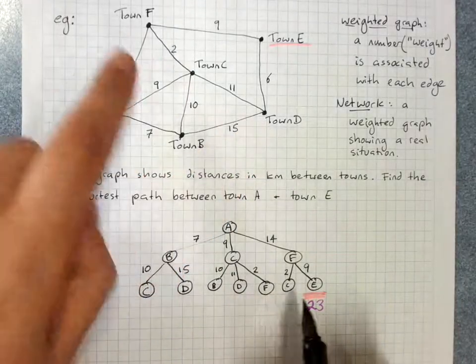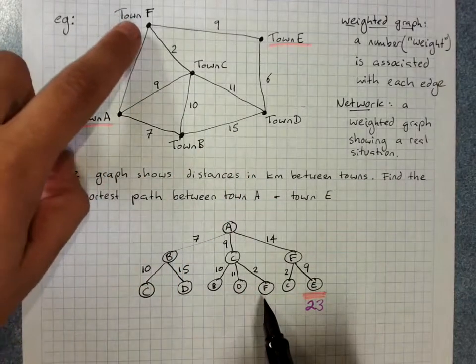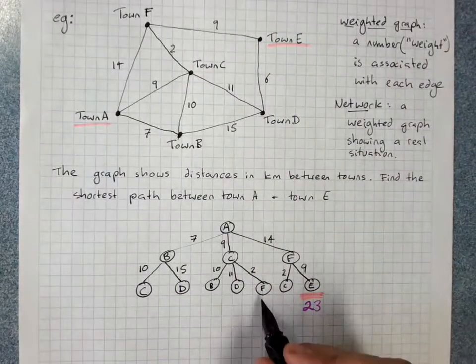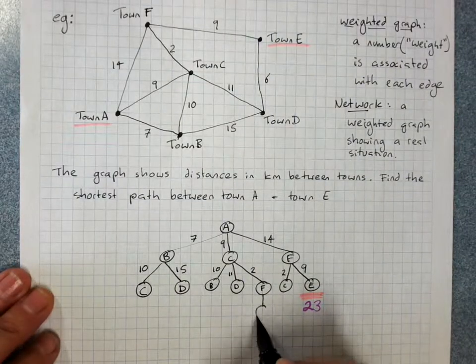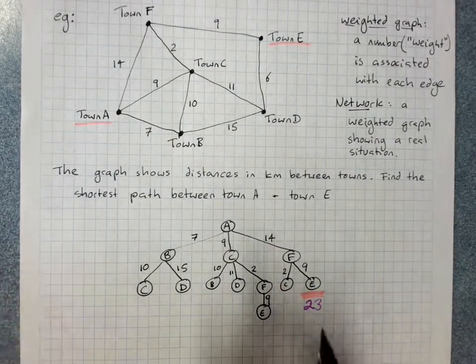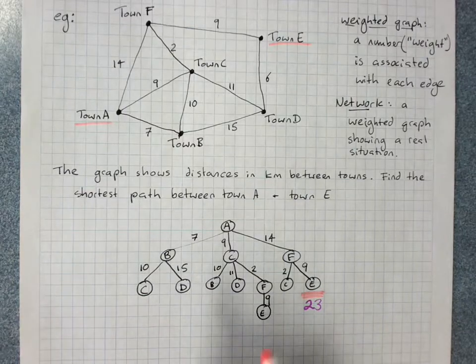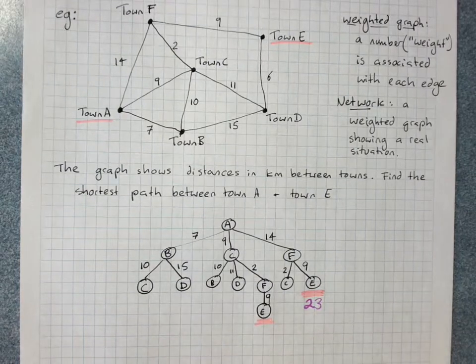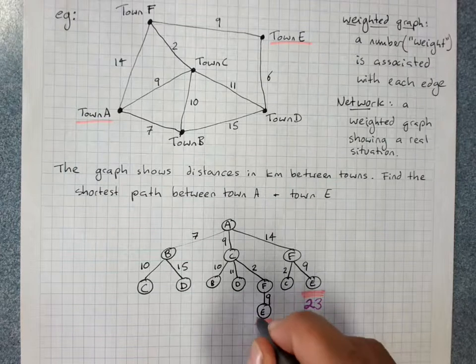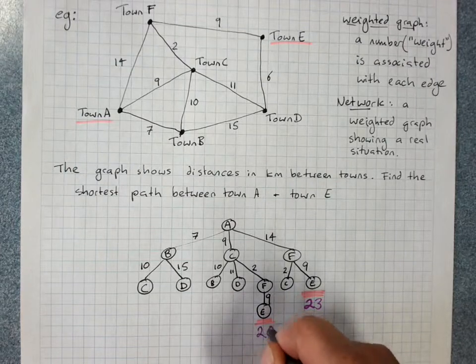From town F straight to town E, that's 9. Great, I've got another option that gets me to E. That's 20.